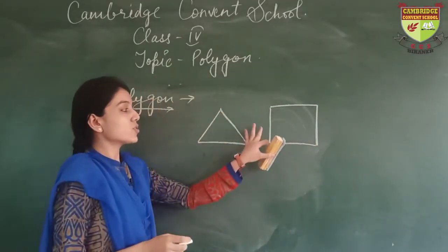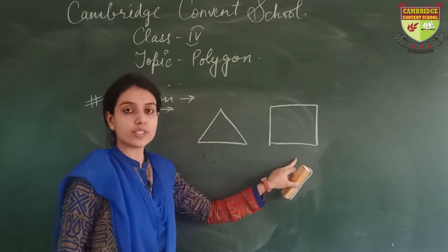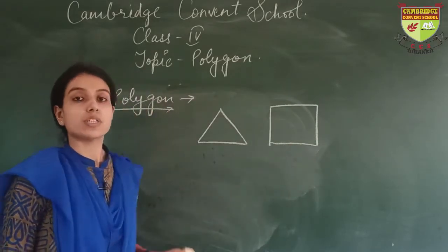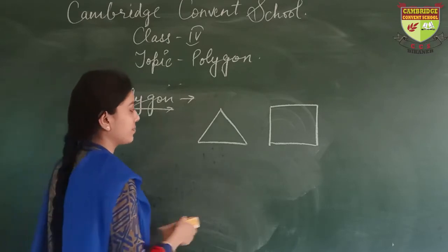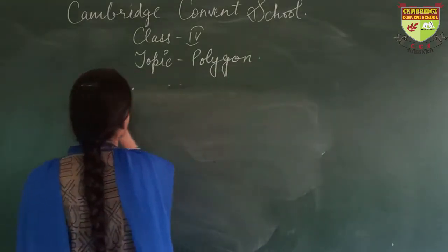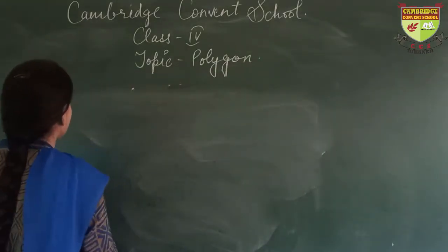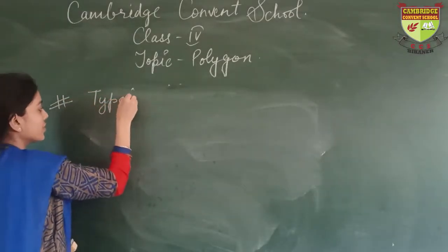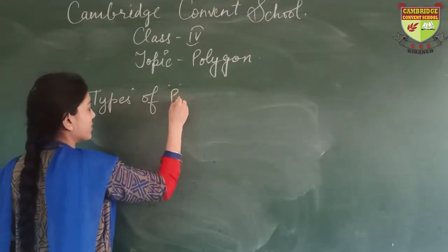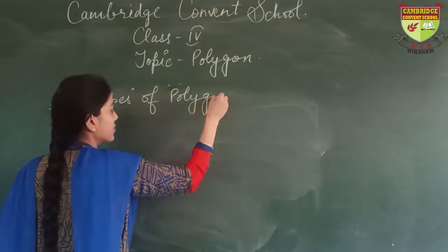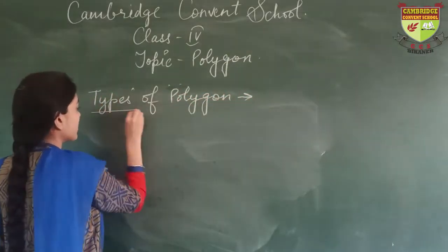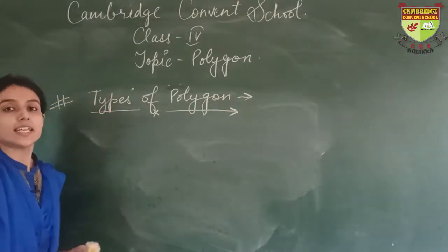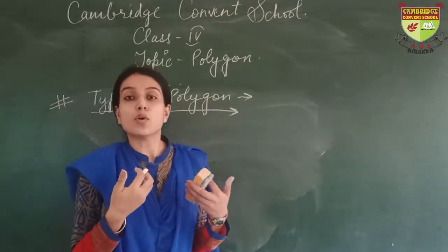A figure with 4 sides is also known as a polygon. So now we discuss about the types of polygon. Polygons are named according to their number of sides.